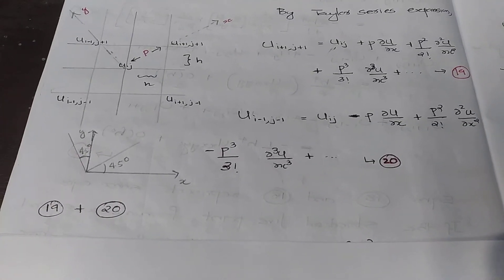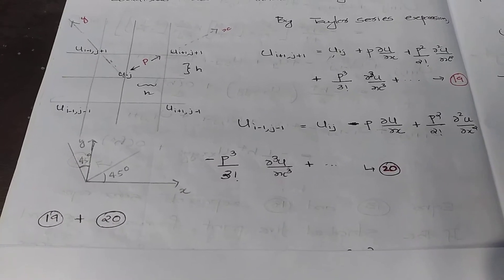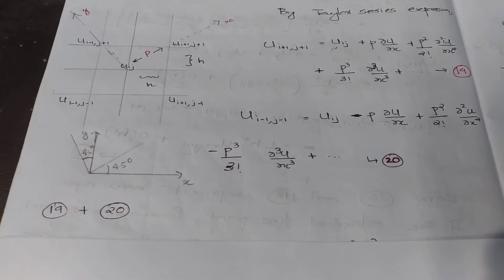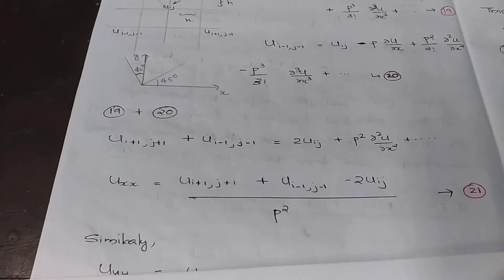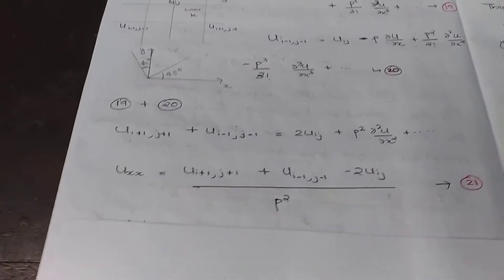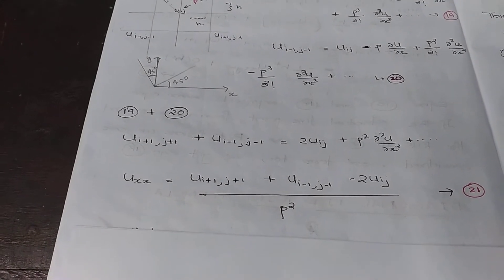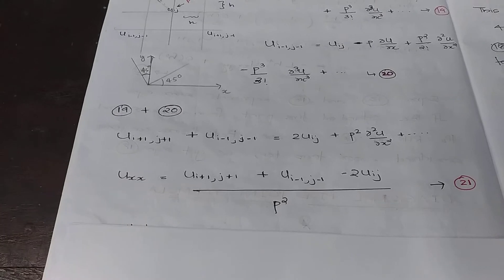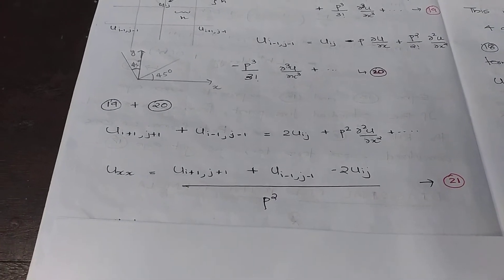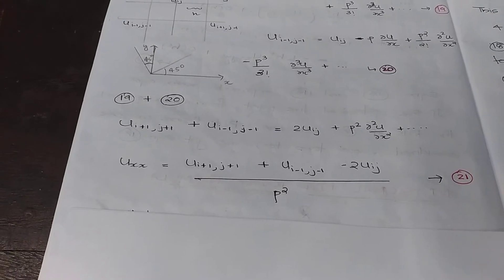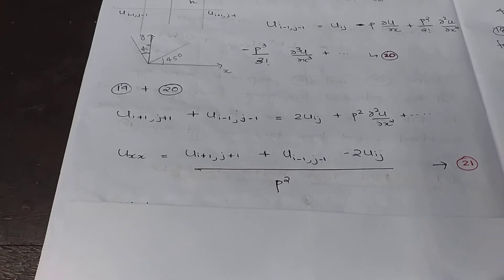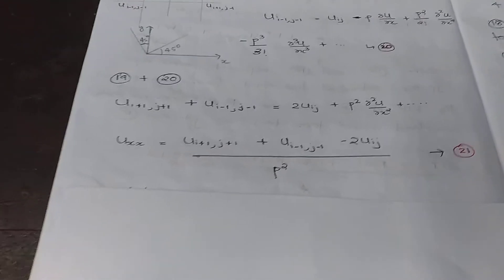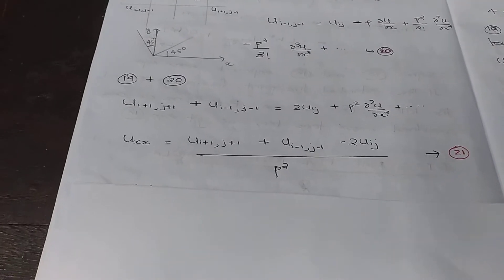Similarly, u(i-1,j-1) can be written by Taylor's expansion as equation number 20. Adding equations 19 and 20, we get u(i+1,j+1) plus u(i-1,j-1) equals 2·u(i,j) plus p²·∂²u/∂x², with higher-order terms not considered. This gives us ∂²u/∂x² as equation number 21.